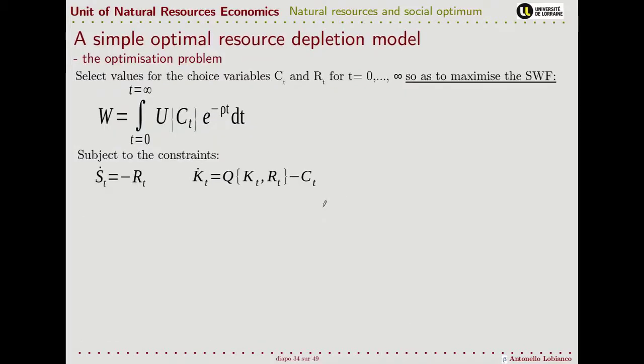To sum up, our resource depletion model takes the form of selecting the choice variables, consumption and resource extraction at any given moment in time from now to the infinite, in a way that the welfare is maximized. This is subject to the two constraints that take the form of these differential equations, that we call equations of motion, over the stock of natural resources and the stock of capital.